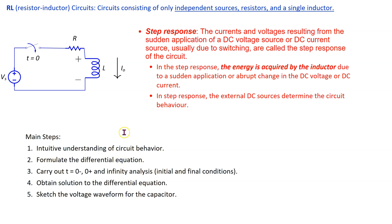In this video, we will look at the step response of an RL circuit. An RL or resistor-inductor circuit consists of only independent sources, resistors, and a single inductor. The step response is defined as the currents and voltages resulting from the sudden application of a DC voltage or DC current source due to switching. In the step response, the external DC sources determine circuit behavior, and unlike the natural response, energy is acquired by the inductor due to the abrupt change in DC voltage or current.